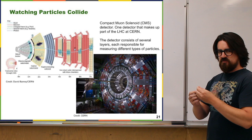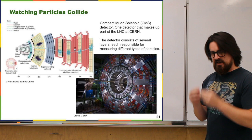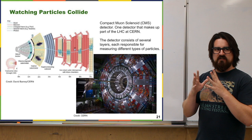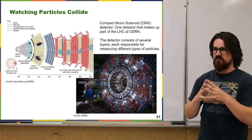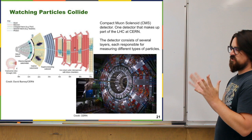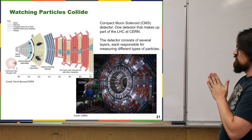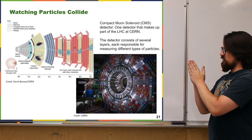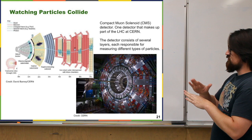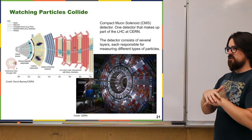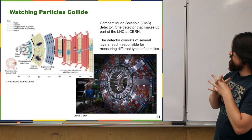So when you do bring those particle beams together and eventually collide them, you want to have a lot of information about what happens. The way you do that is generally by building around the collision point these detectors that are made up of multiple stages of instruments. The text goes into more detail about what's actually going on in the image there. All those different pieces that make up one detector in this collider do different things, but mostly having to do with tracking the path of a particle and measuring the amount of energy that it has.